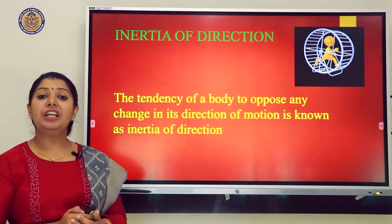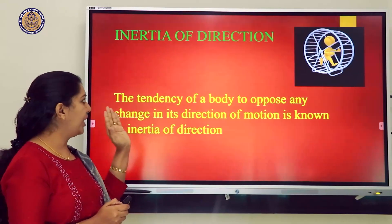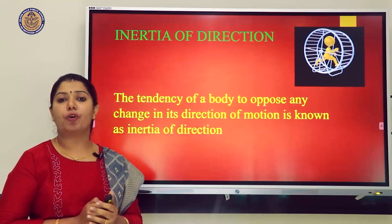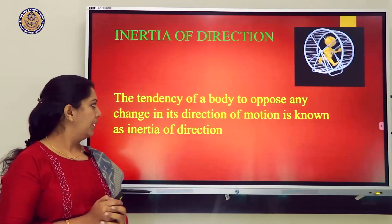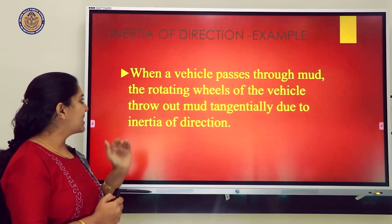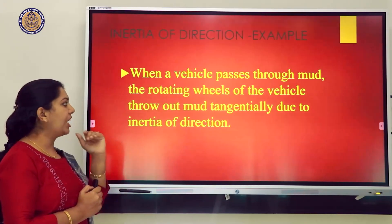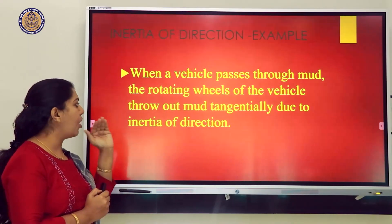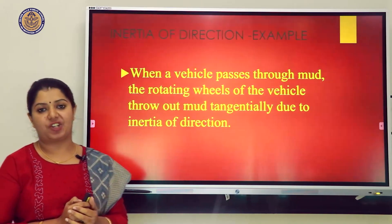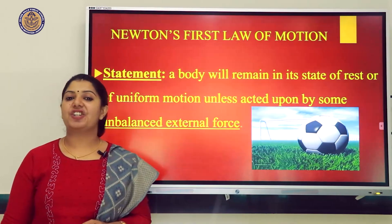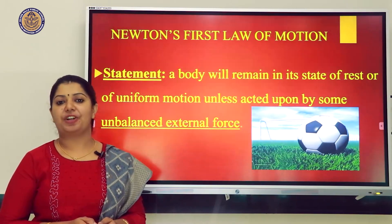Inertia of direction means the resistance of a body to change its state of direction. For example, when a vehicle passes through mud, the rotating wheels throw out mud tangentially due to inertia of direction.